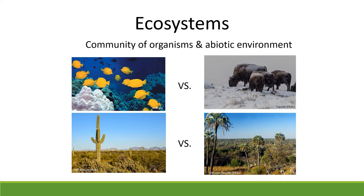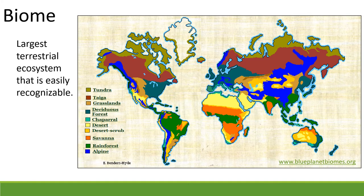Think about ecosystems as communities of organisms plus the abiotic environment. The communities of organisms might be a school of fish, a herd of bison, or a stand of saguaro cactus. The abiotic environment is the patterns of precipitation and temperature. At the largest scale, we have what we call biomes — the largest recognizable ecosystem unit. Examples include tundra, grasslands, chaparral, desert scrub, and savannas. When you walk into them, you know you're in that ecosystem.